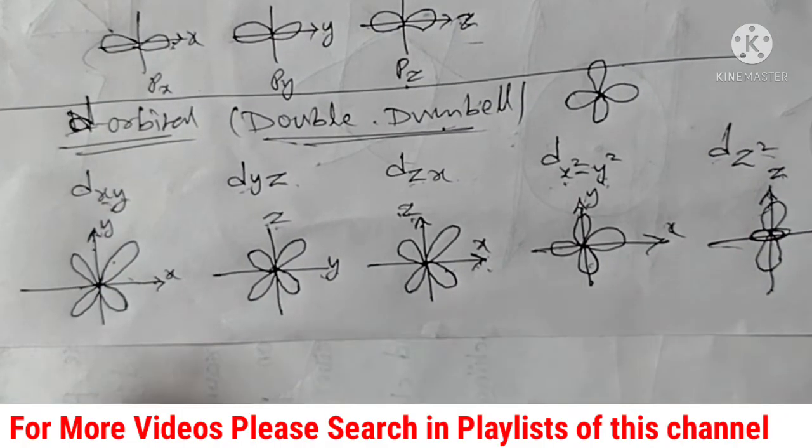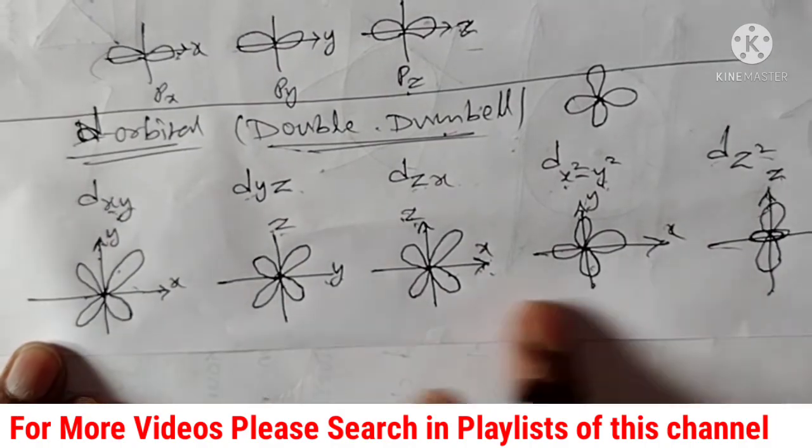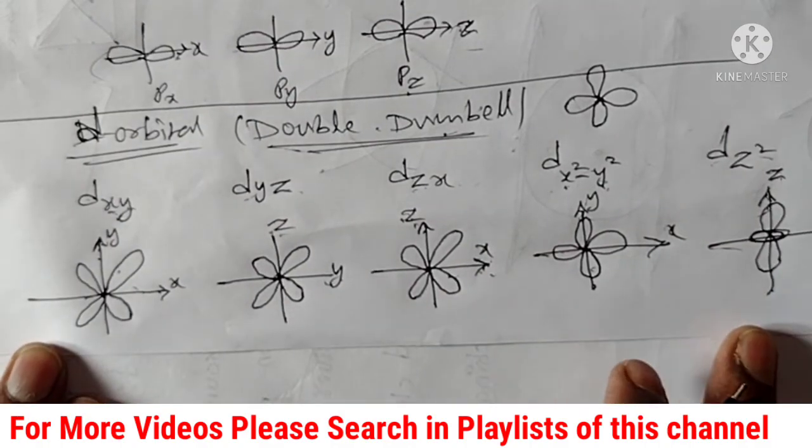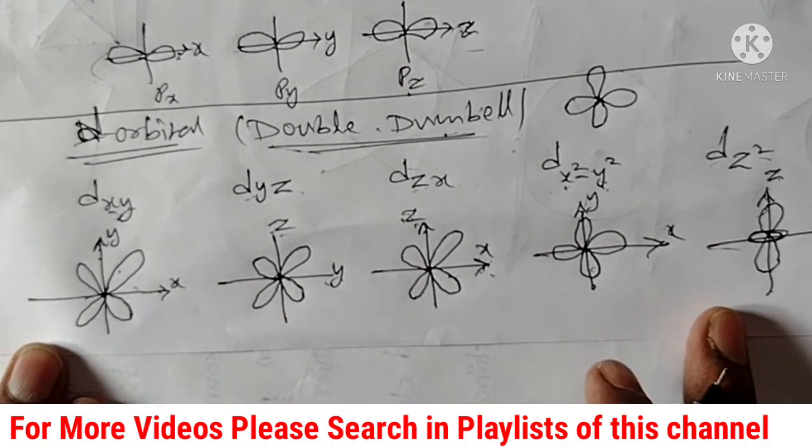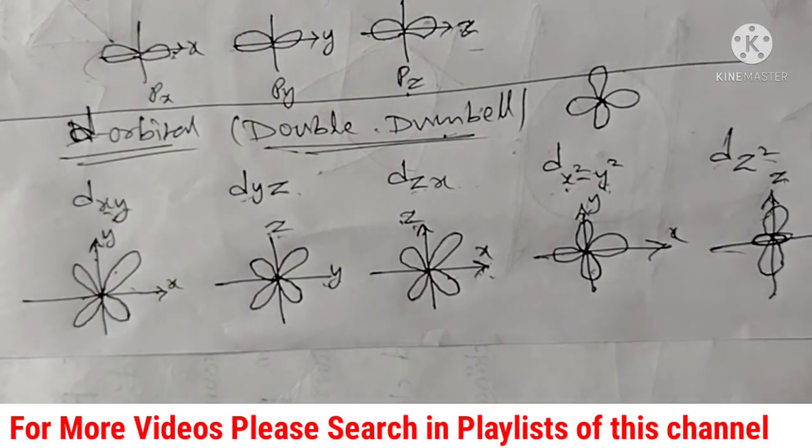So, this is the shape of the d orbital — simple, easy, and very important. Thank you.